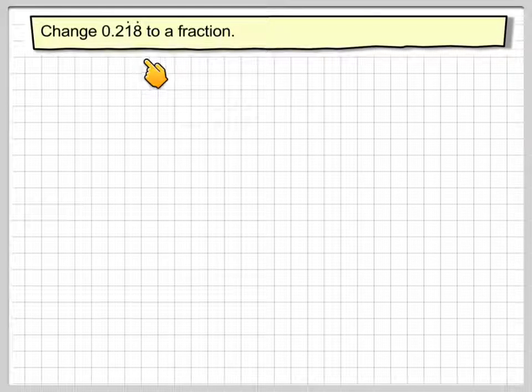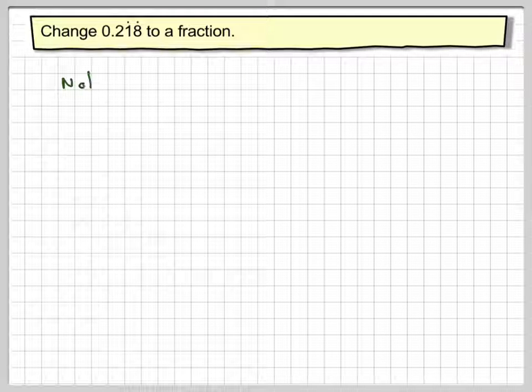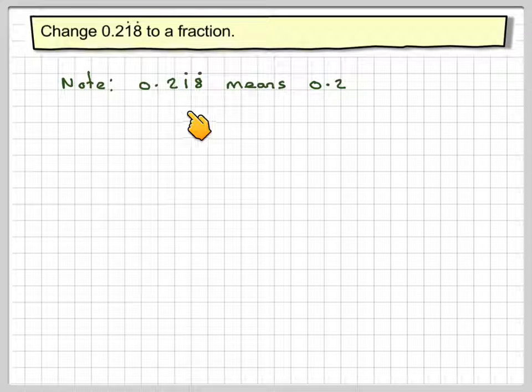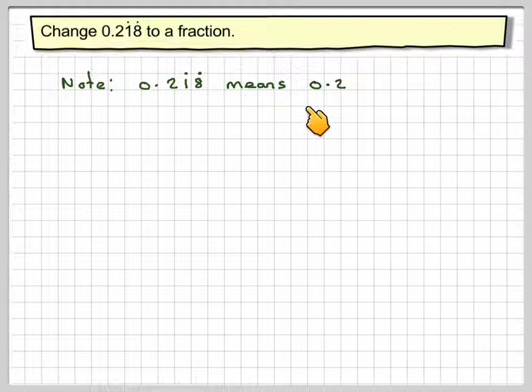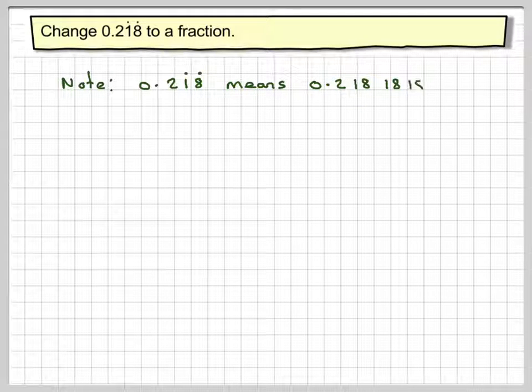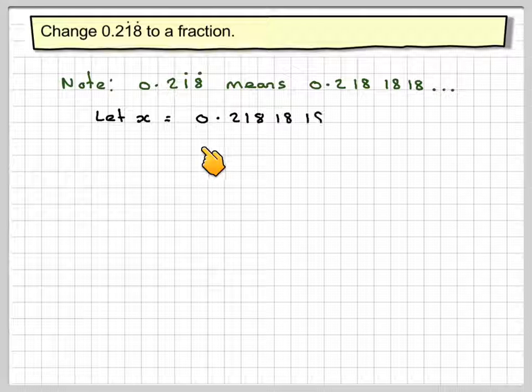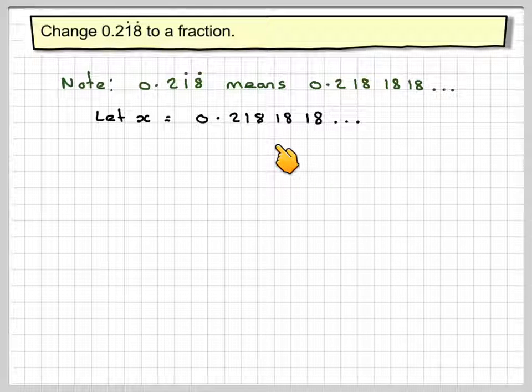Change 0.218, where the 18 is the only bit recurring, to a fraction. Note that 0.218, with a dot on the 1 and the 8, means 0.2181818 forevermore. Let x equal 0.2181818...